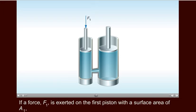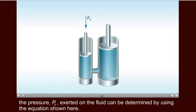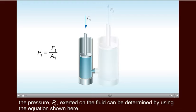If a force, F1, is exerted on the first piston with a surface area of A1, the pressure, P1, exerted on the fluid can be determined by using the equation shown here.